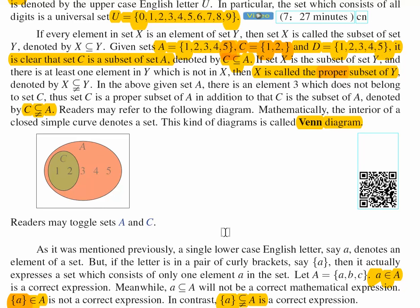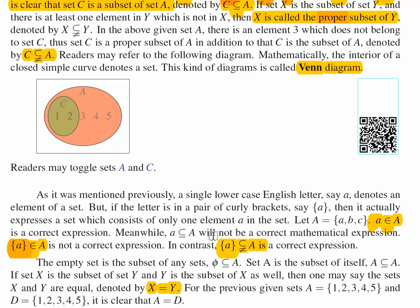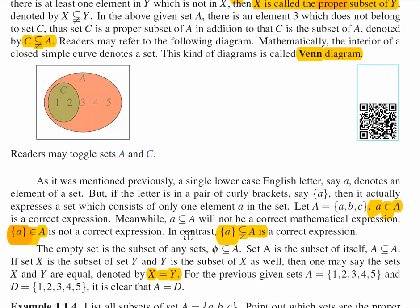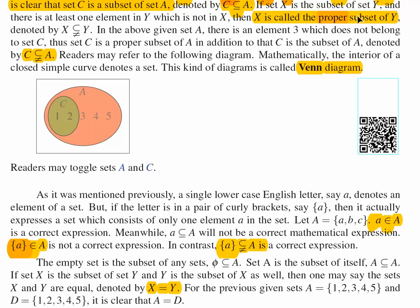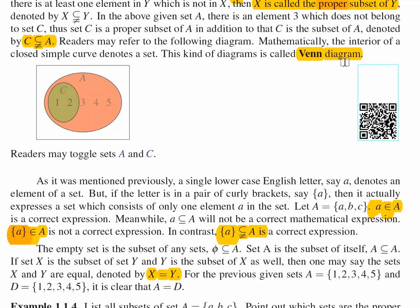We have also talked about when two sets are equal. A and D are equal — A has 1, 2, 3, 4, 5 elements inside, and D also has five elements inside. So you may denote A equals D.